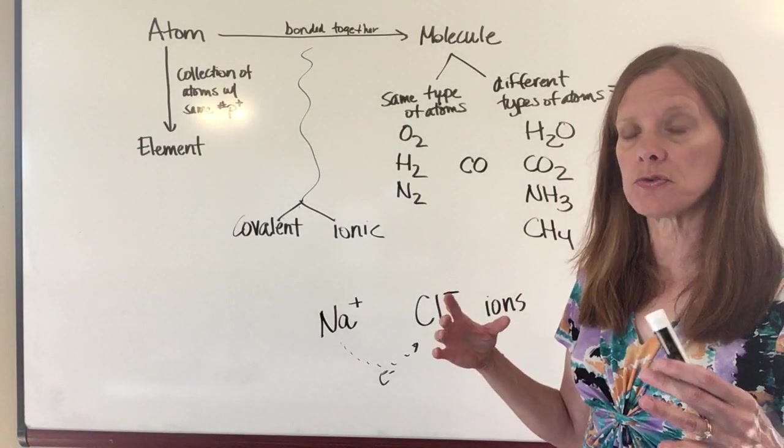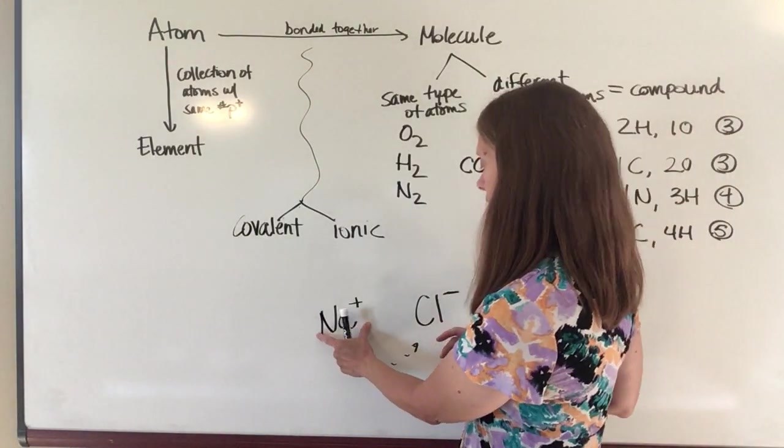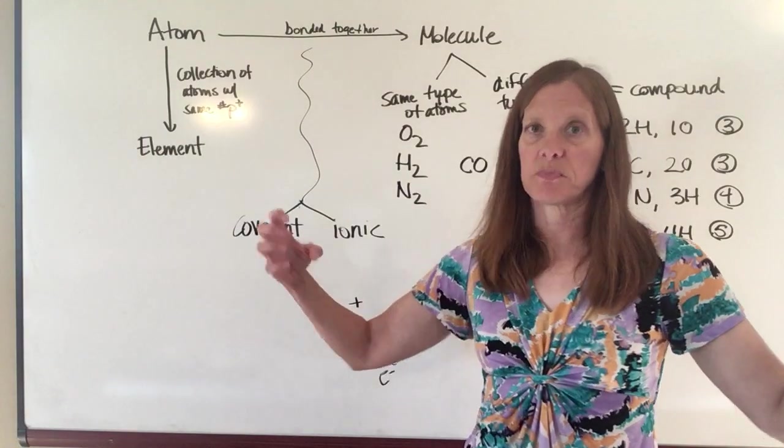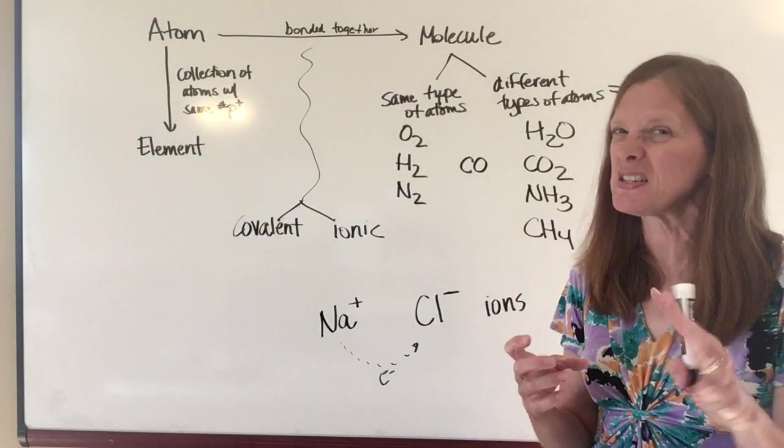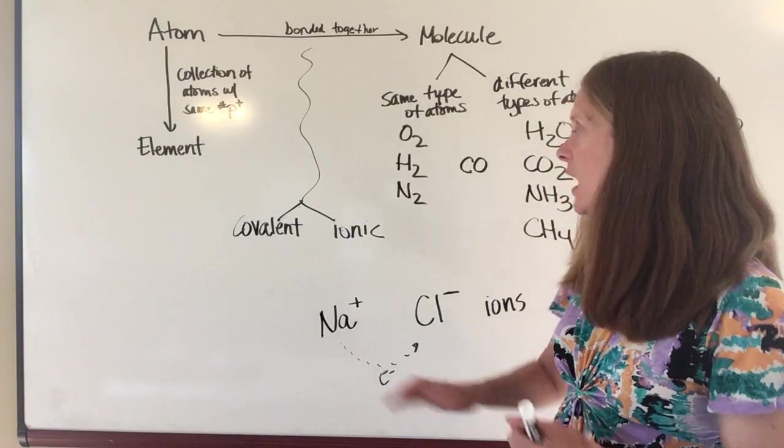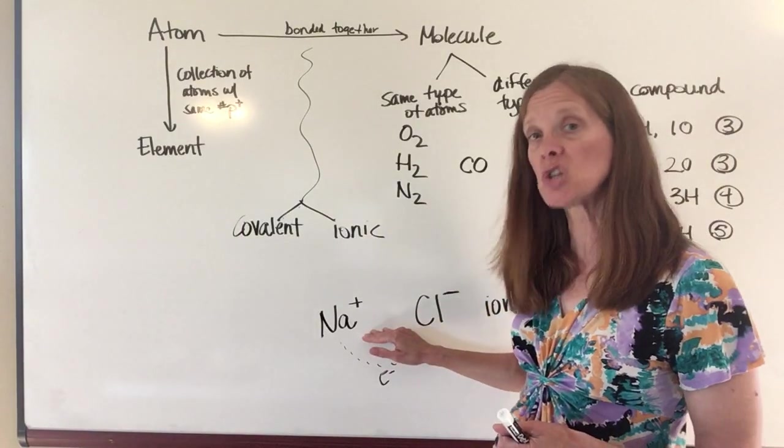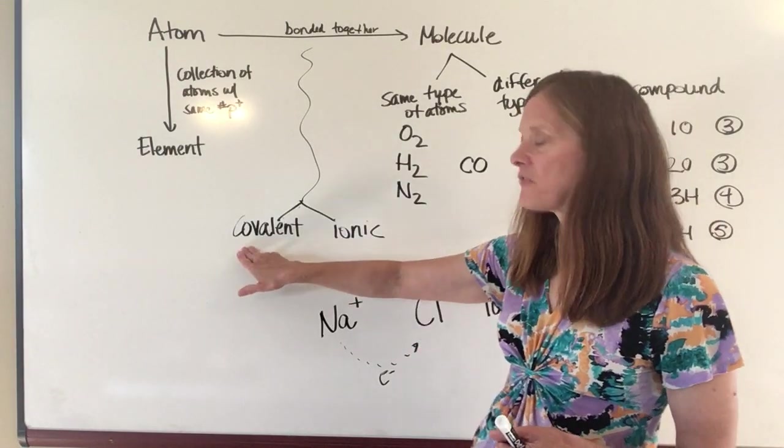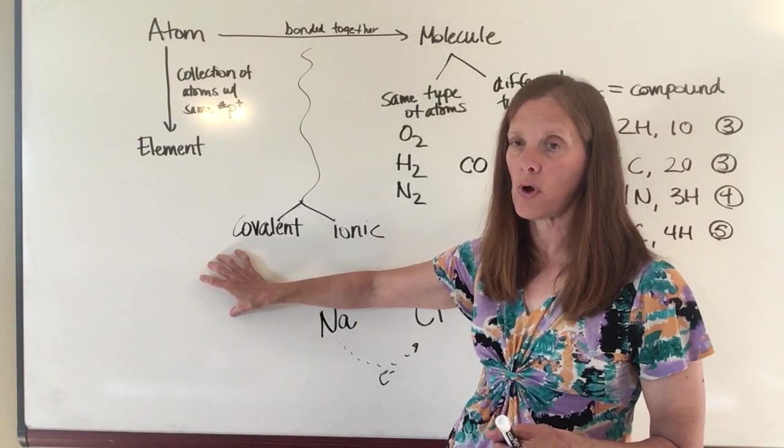And then what happens is that because you know that positive charges and negative charges attract one another, the positively charged sodium and the negatively charged chlorine kind of stick together, kind of like you can almost think of it like magnets. It's not the same type of attraction, but it's similar, an electric attraction between a positive and a negative charge. This is called an ionic bond because these guys have transferred electrons.